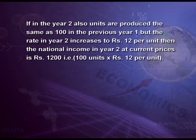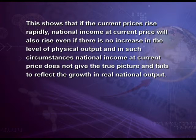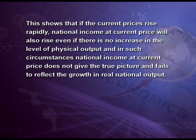Now, if in year 2 the same 100 units are produced as in year 1, but the rate increases to rupees 12 per unit, then the national income in year 2 at current prices is rupees 1200. This shows that national income has increased by rupees 200 in year 2 compared to year 1. But the production level is the same at 100 units in both years. This is why national income at current price is not considered real. If current prices rise rapidly, national income at current price will also rise even if there is no increase in the level of physical output, and thus fails to reflect the growth in real national output.